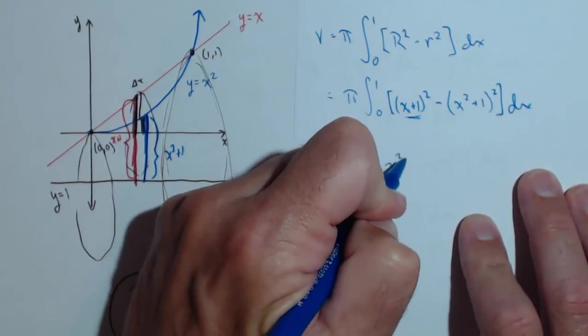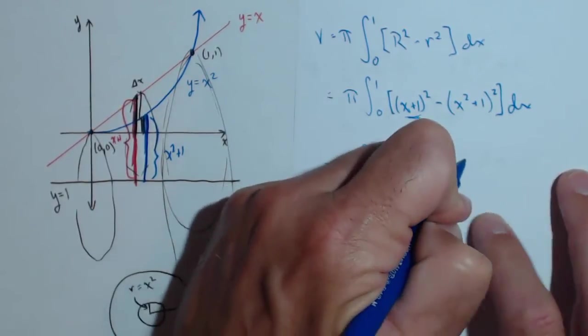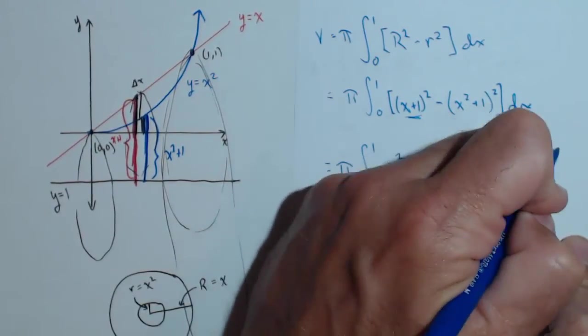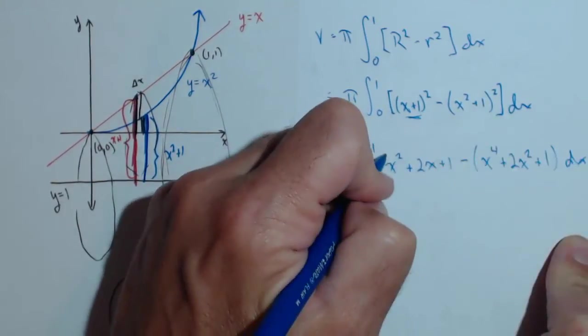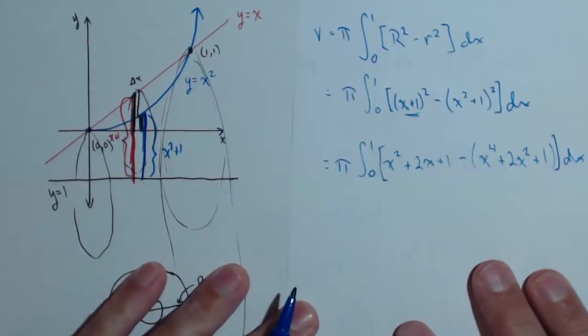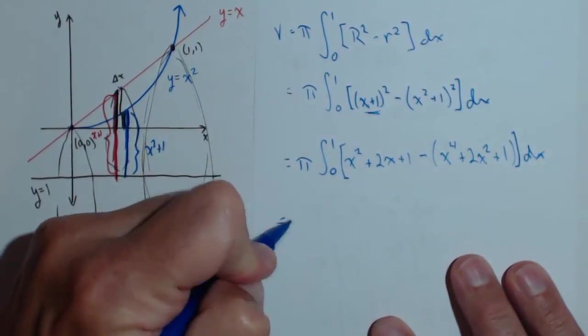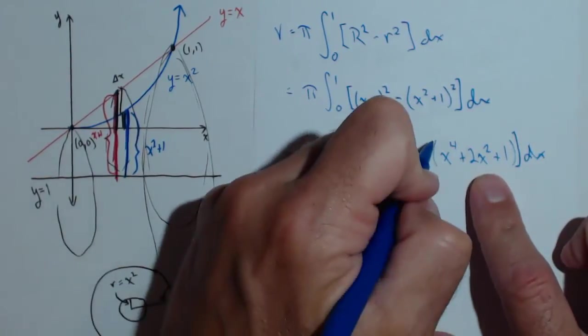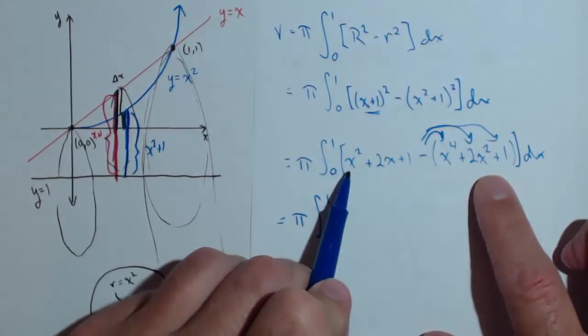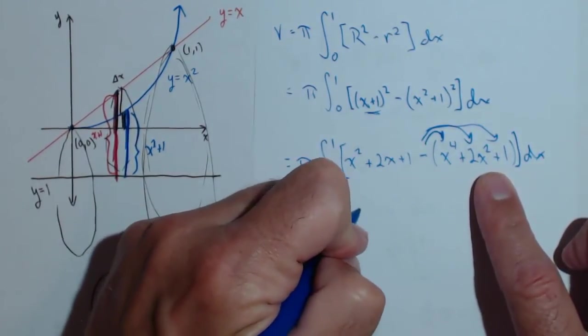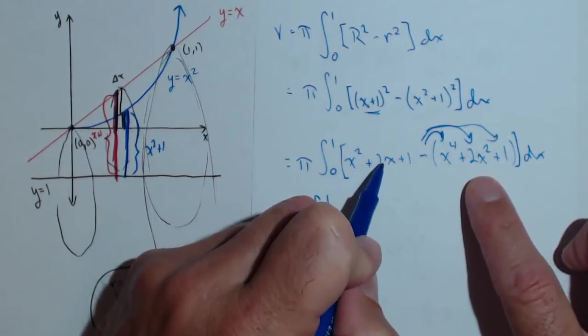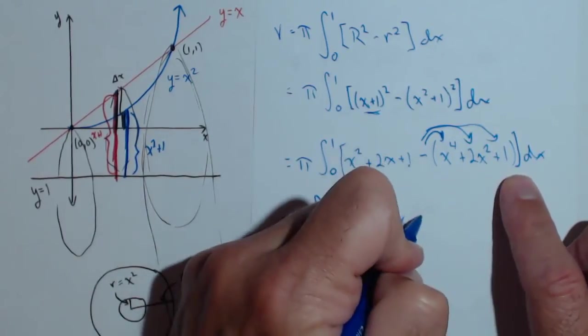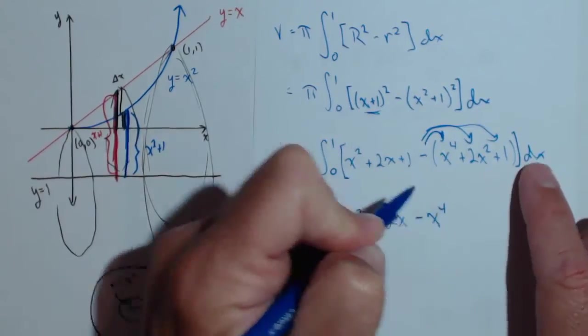We'll foil that out. And we have x squared plus 2x plus 1 minus, if we foil this out, x to the 4th plus 2x squared plus 1 dx. So 0 to 1, we've got to combine like terms. So I have an x squared. Don't forget this negative is going to get distributed. x squared minus 2x squared leaves me with a negative x squared. 2x, there's no other term for that. So plus 2x. Plus 1 minus 1 goes away. And we have a minus x to the 4th dx.